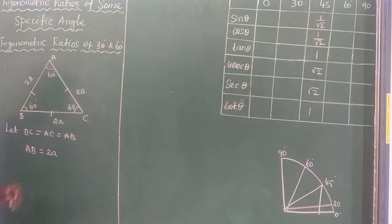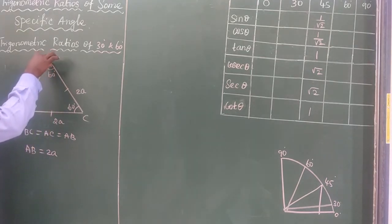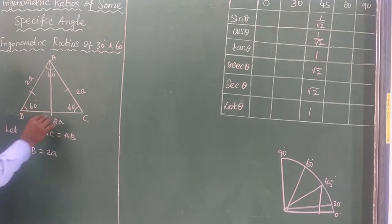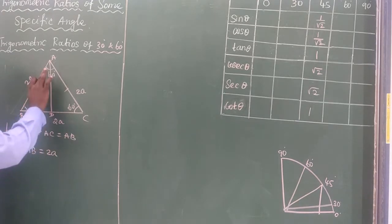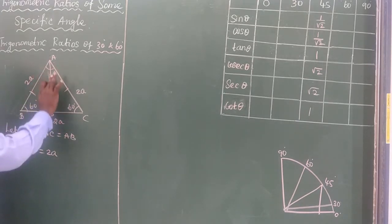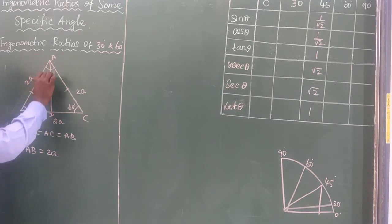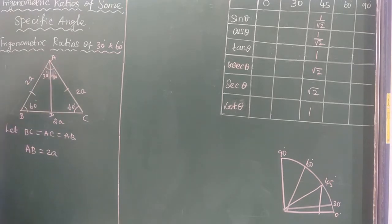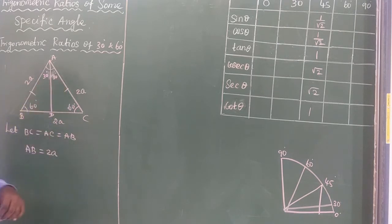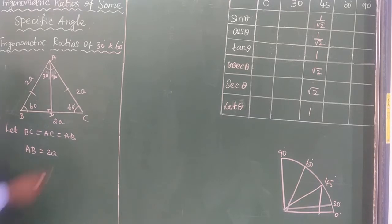Now I will draw a line — a perpendicular — from A down to point D on BC. That point D is such that AD is the bisector of angle A. So the angle at A is split: 30 degrees and again 30 degrees, since the total angle at A is 60 degrees.